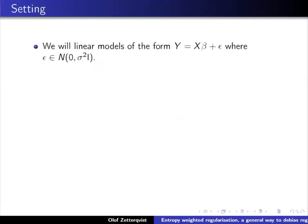Just to go through the setting we are looking at: we study linear models of this form. We have a data matrix X and unknown parameters beta, which together construct the Y matrix, with additional noise assumed to be normally distributed with unknown variance sigma squared.